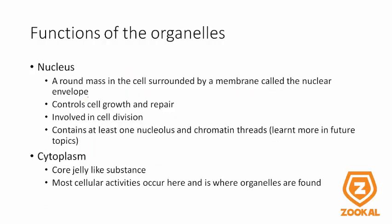Functions of the organelles: The nucleus is a round mass in the cell surrounded by a membrane called a nuclear envelope, and it controls cell growth and repair. It is also involved in cell division. The nucleus contains at least one nucleolus, which is the central core of the nucleus, and it contains the chromatin threads. This is learned more in future topics. The cytoplasm is the core jelly-like substance of the protoplasm, and it is where most activities occur and where most organelles are found.